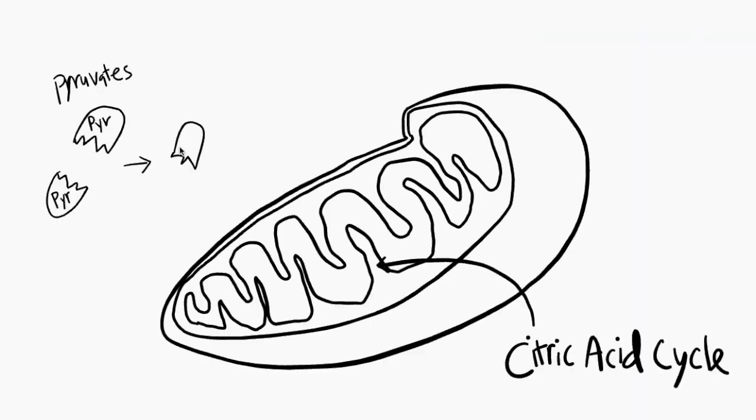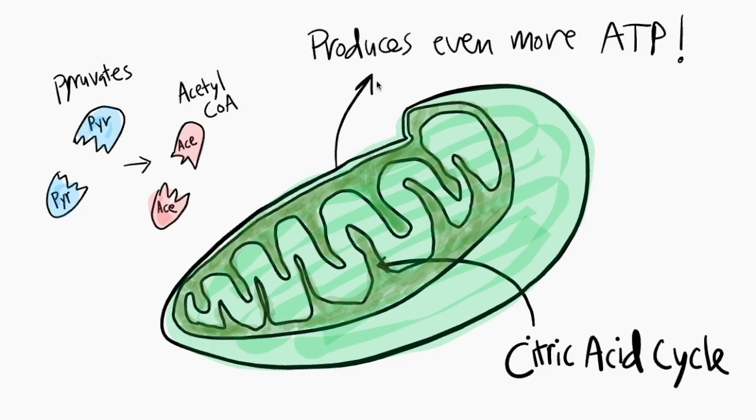The pyruvate molecule created in glycolysis is then conveniently used in the pathway called the citric acid cycle. And sometimes you'll notice people refer to it as the Krebs cycle. Compared to glycolysis happening in the cytoplasm, the citric acid cycle occurs in the matrix of the mitochondria.